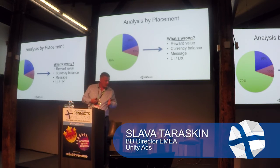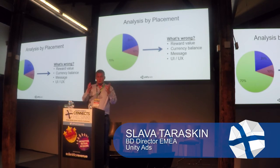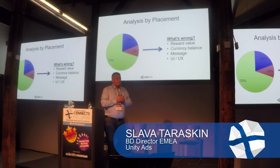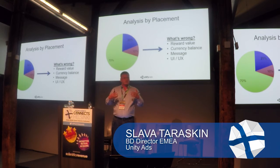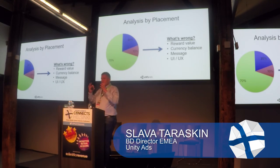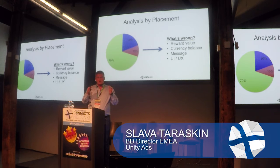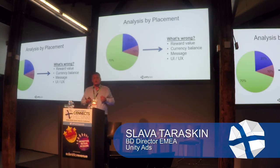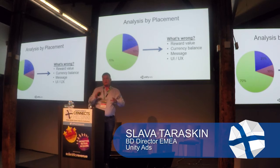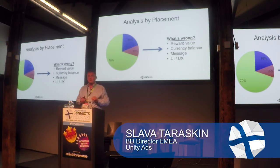Another reason for poor placement performance could be a wrong message — simply an unclear message about what happens if you press the button. For example, after a round ends, if there's a messy button with too many words like 'congratulations, push this button to double your revenue,' it can be so natively integrated into the final screen that players just skip it because they don't see it. The button message could be wrong, the button could be hidden, the user experience is bad, or the rewarded video interrupts gameplay. There are four key reasons why a placement could perform poorly.